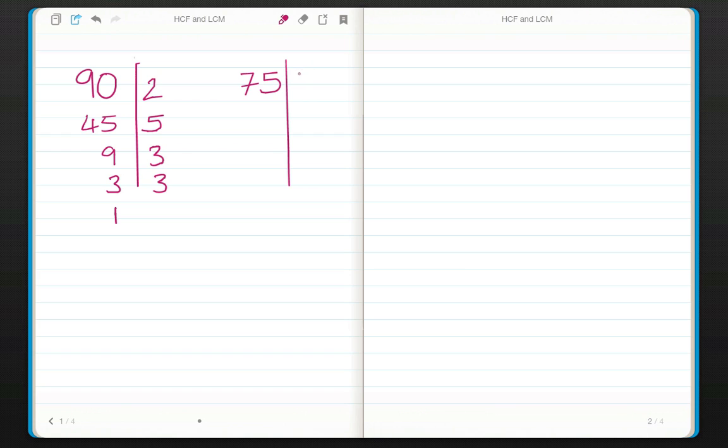We think of a prime number that goes in and that's 3. That leaves me with it goes in 25 times. We think of a number that goes into 25 and that's 5. That goes in 5 times. And a number that also goes into 5 is 5 and that goes in once.